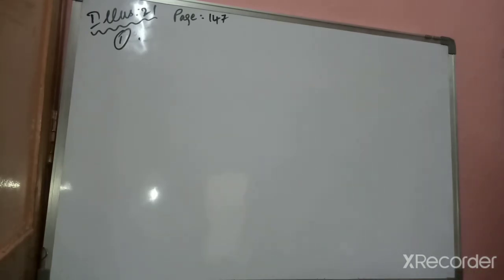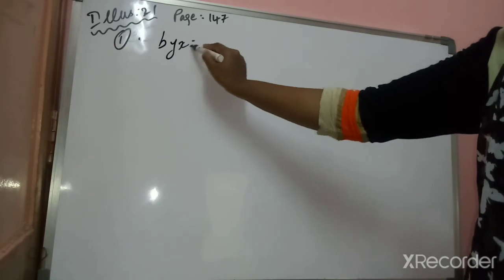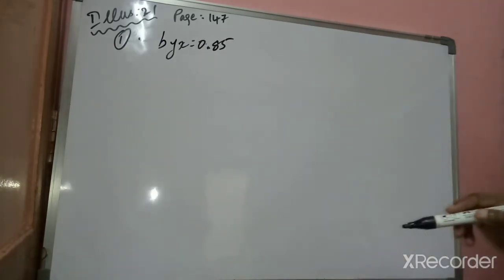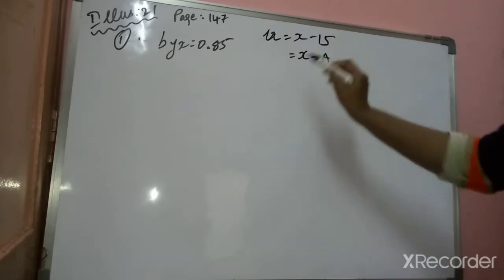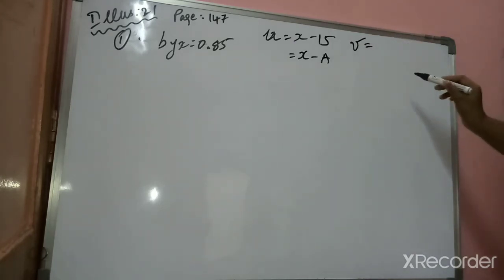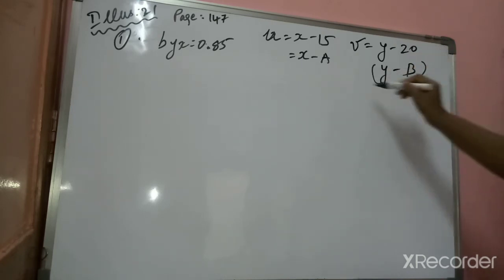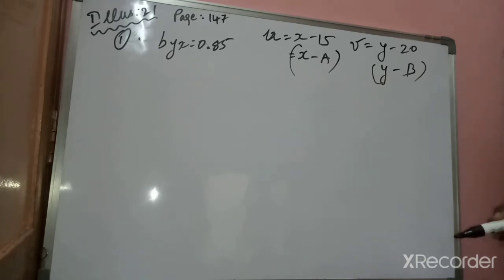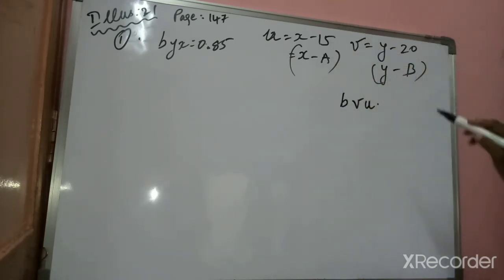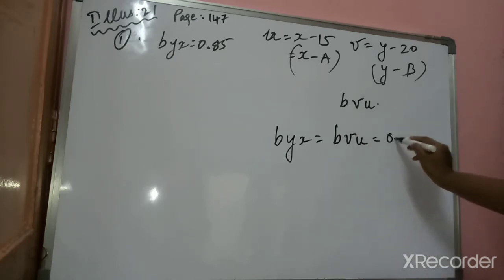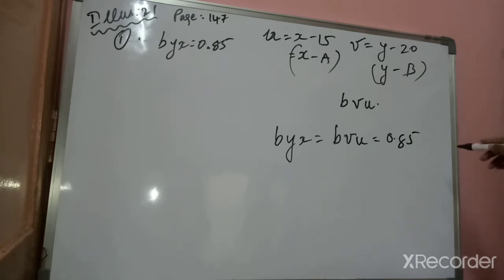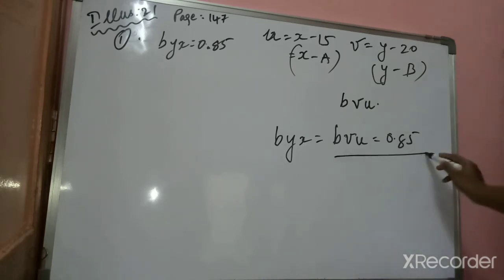Now illustration number 21, first question. Given B_YX equals 0.85, U equals X minus 15, and V equals Y minus 20. Find the value of B_VU. Since B_YX equals B_VU when there is no scaling factor (only shifting), the answer is the same. Therefore B_VU equals 0.85.